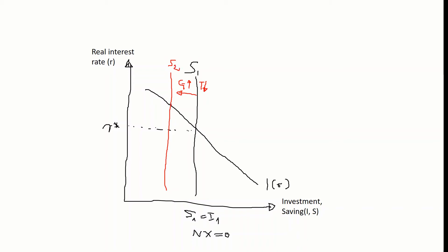In a closed economy, the interest rate would rise to a higher level. But in an open economy, the domestic interest rate stays at the world interest rate level. Only public saving decreases to S2, while investment stays at the same level I2. The difference between saving and investment is covered by net exports, which become negative — the trade balance deteriorates due to increased government spending and decreased savings.